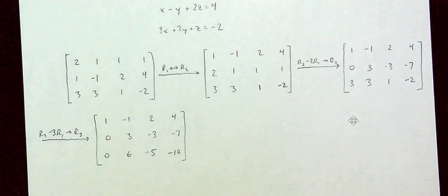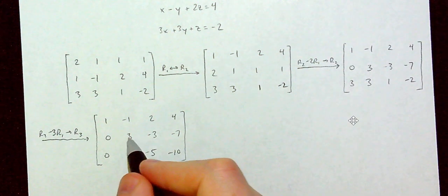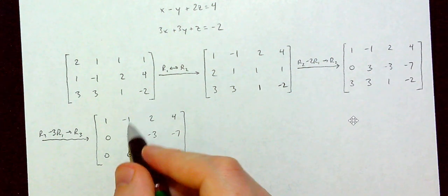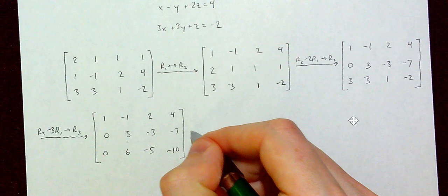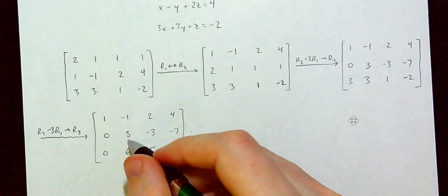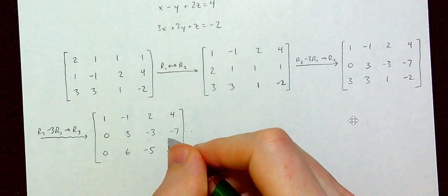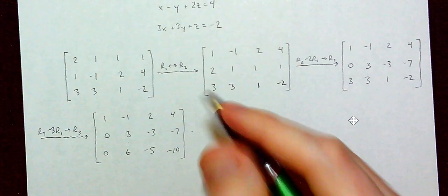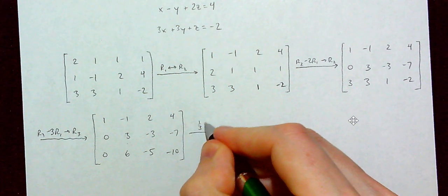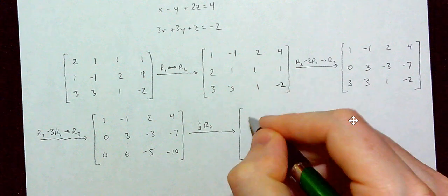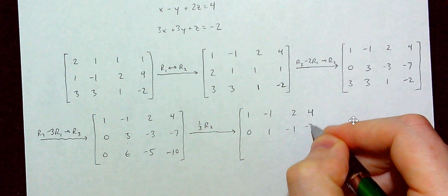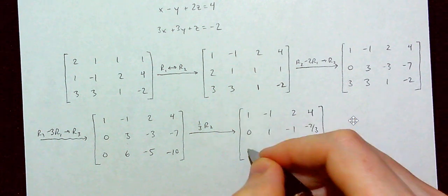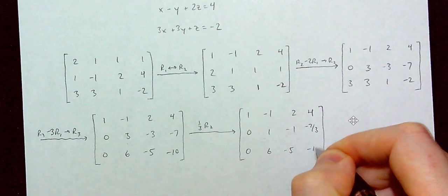Now we work on the second column, wanting a leading 1 there with zeros above and below. To make the row 2 entry a 1, I divide row 2 by 3 — multiplying by one third. So one-third of row 2 gives: 0, 1, negative 1, negative 7 thirds. Row 3 stays as 0, 6, negative 5, negative 10.